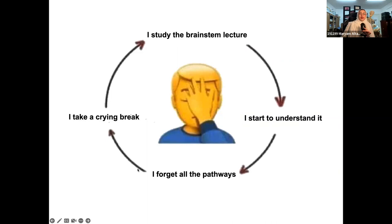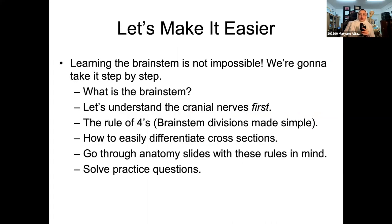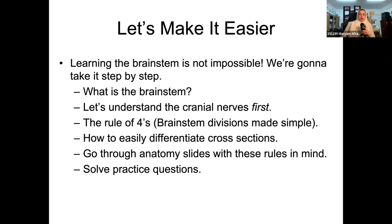The approach I'm taking today is what I genuinely wish I had in neuro in second year, because this would have saved me hours and hours of learning. The brainstem is a very complex and daunting topic, so we're going to make it as easy as possible. We'll take it step by step: first, what is the brainstem; then the cranial nerves at a surface level; then the rule of fours; then a trick to differentiate cross sections; then anatomy slides; and finally practice questions.